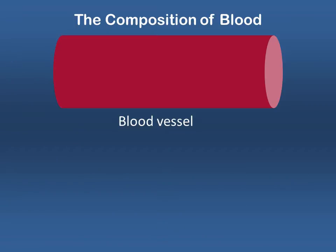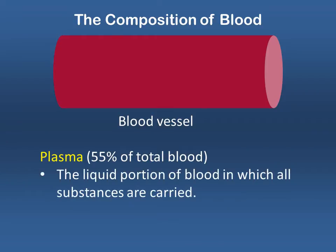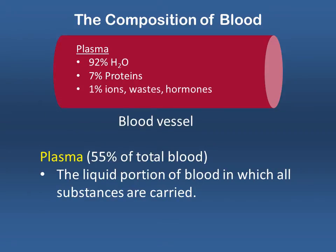As we talk about blood and how it travels through our circulatory system, we should know a little about the composition of blood. About 55 percent of our total blood volume is plasma — the liquid portion of our blood in which all needed substances are carried. Plasma is mostly water (92 percent), about seven percent plasma proteins, and a remaining one percent of ions, waste products of cellular respiration, and hormonal signals needed around the body.